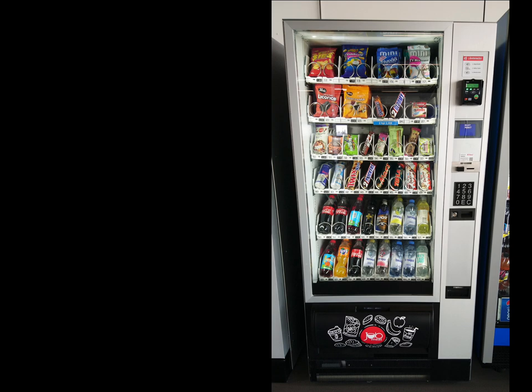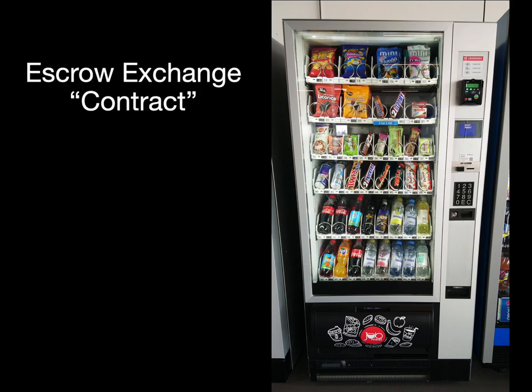A vending machine is a mechanistic embodiment of an exchange contract — my money for the seller's snack. The notion of exchange is a symmetric notion. Even though it's symmetric, I've never seen a vending machine that first gives me the snack and then demands my money. The reason is that the vending machine's enforcement abilities do not extend beyond the box. If it gave me the snack first and I ran away without giving it the money, it could not run after me demanding the money. So instead, the vending machine implements an escrow exchange contract.